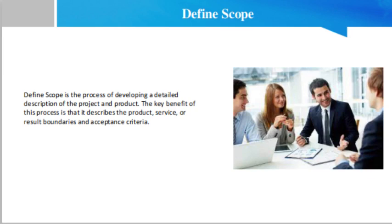What is the Define Scope process? Define Scope is the process of developing a detailed description of the project and product. The key benefit of this process is that it describes the product, service, or result boundaries and acceptance criteria. The Define Scope process selects the final project requirements from the requirement documentation developed during the Collect Requirements process, and then develops a detailed description of the project, product, service, or result.